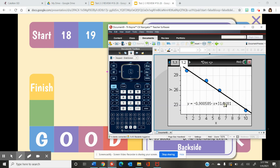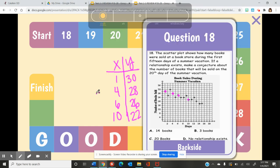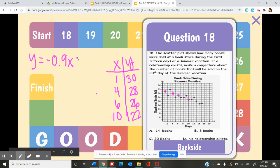We come up with this equation: Y equals negative 0.9X, and then it was plus 31.2. I'm going to round to the 10th place. Now I want to find out how many books will be sold on the 20th day.